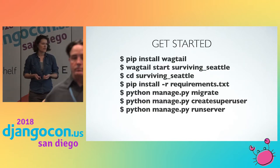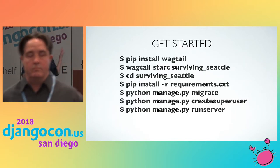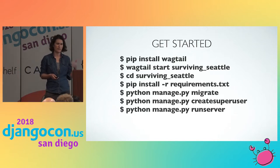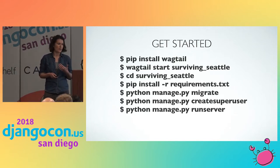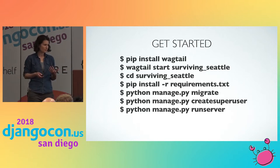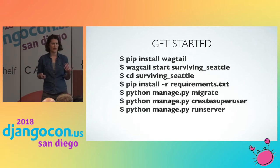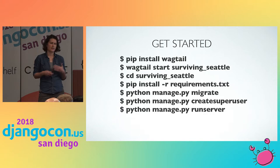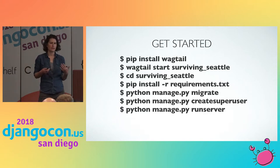So we'll get started. This should look pretty similar to Django. You do a pip install of Wagtail, you do wagtail start and then your project name — we're calling ours Surviving Seattle. You change directories into your project, install requirements, migrate, create superuser, run server — all that good stuff that you're probably used to if you've used Django before.